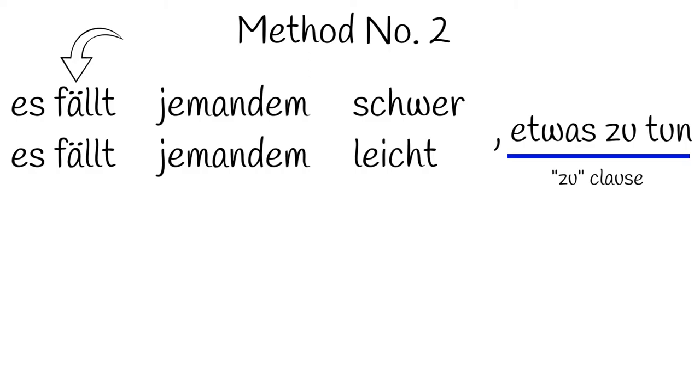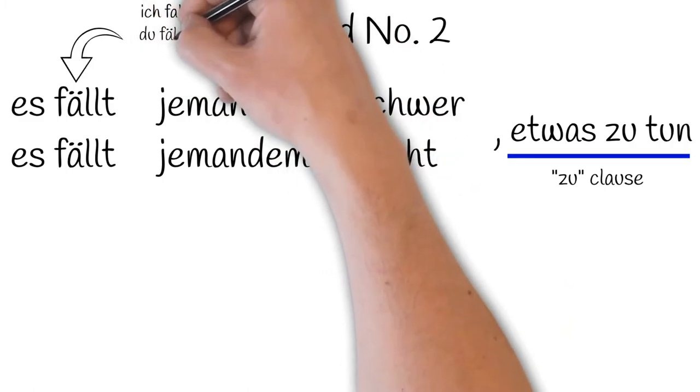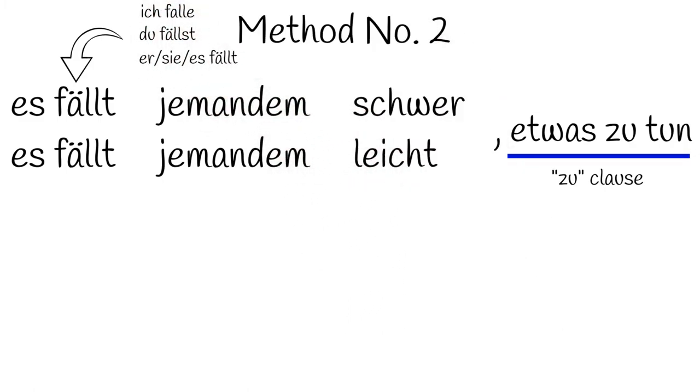It's du and er, sie, es forms, which are really the only two forms to ever change in the present tense, change, which indicates that it is a strong verb in the past tense, that is it maintains its en, and you would say ich bin gefallen.